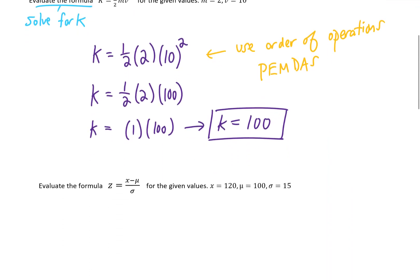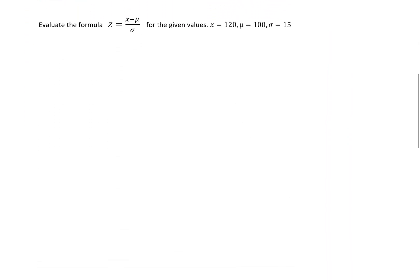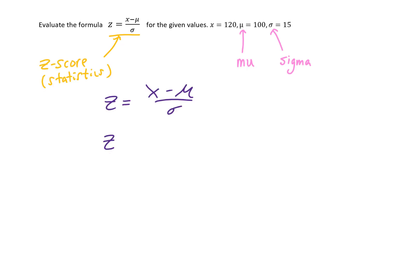Here's a formula with some foreign-looking letters. We're going to evaluate this formula to solve for z. We're given x, the Greek letter mu (μ), and the Greek letter sigma (σ). This is a z-score formula from statistics. The given values are x equals 120, mu equals 100, and sigma equals 15.